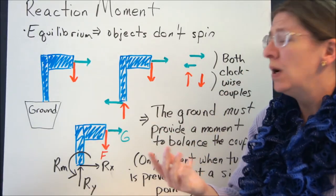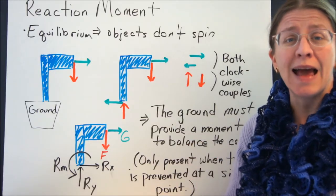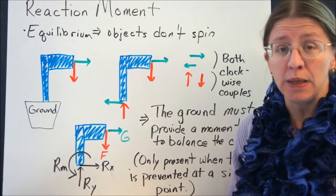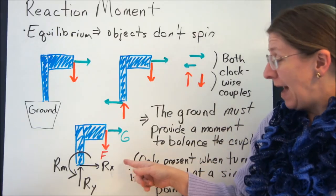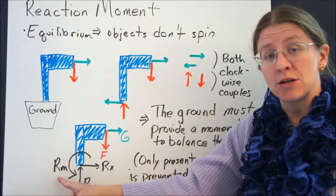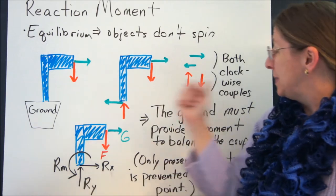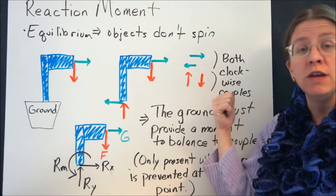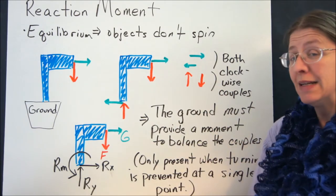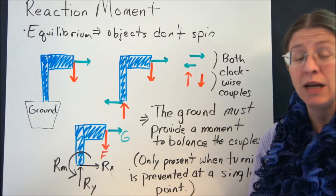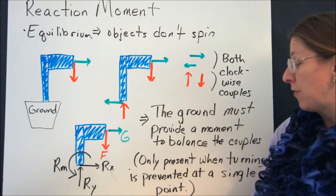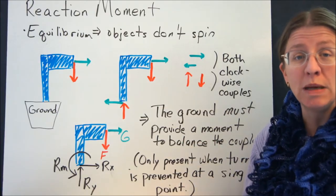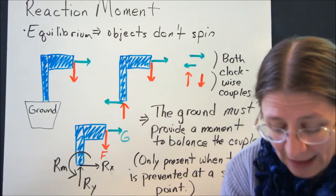Which shows you that the ground has to be doing something else. It can't just be providing a horizontal and a vertical force. There has to, in fact, be a reaction moment. There has to be something to counter these two couples. After all, it's not that it's just spin forever. Equilibrium tells us that that does not happen. So the ground must be providing a moment all by itself, here at the ground.